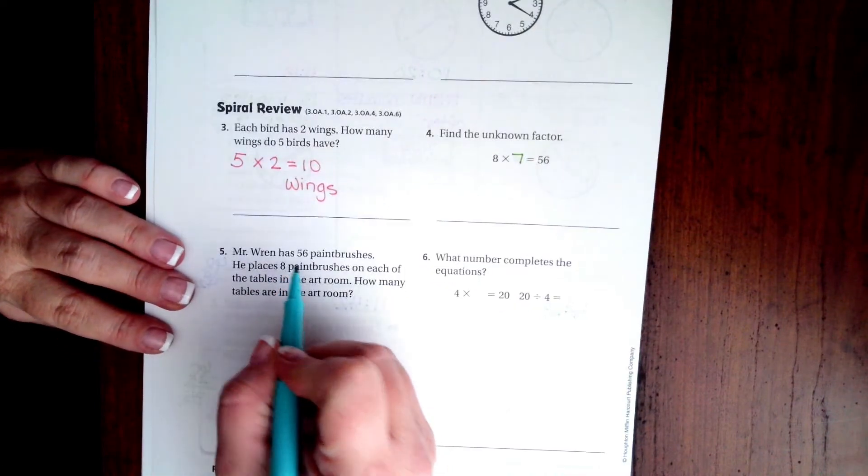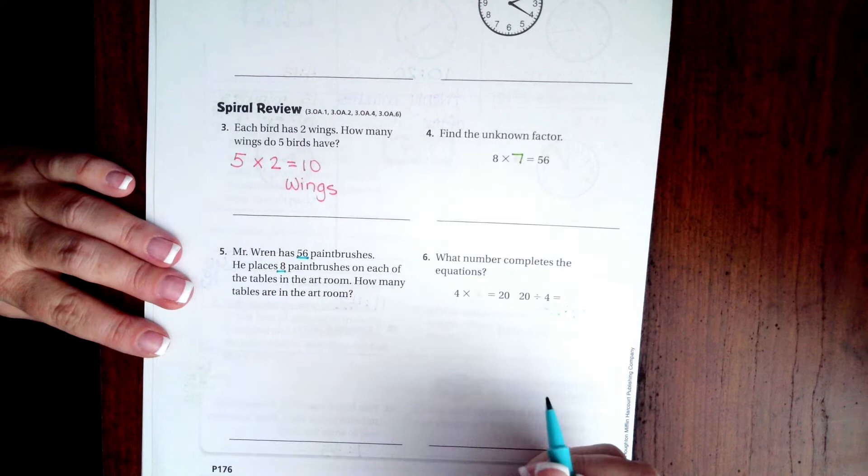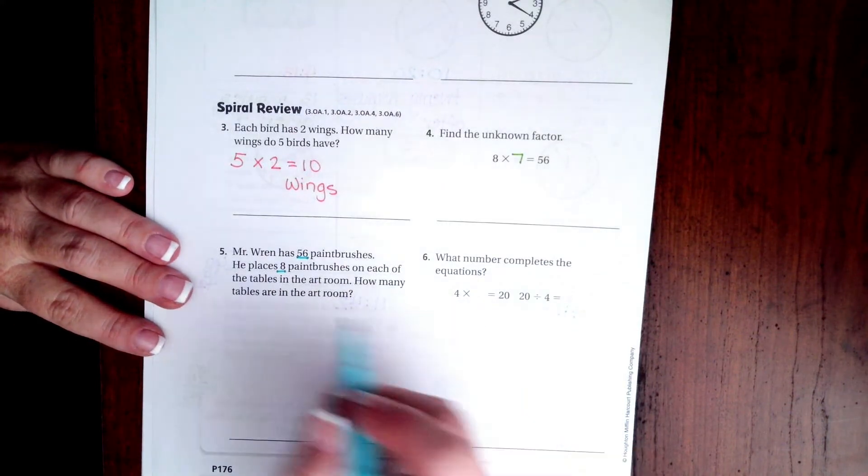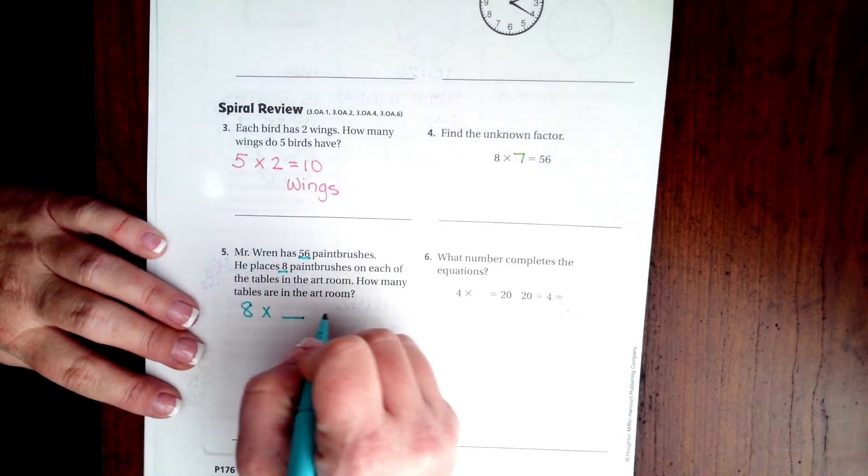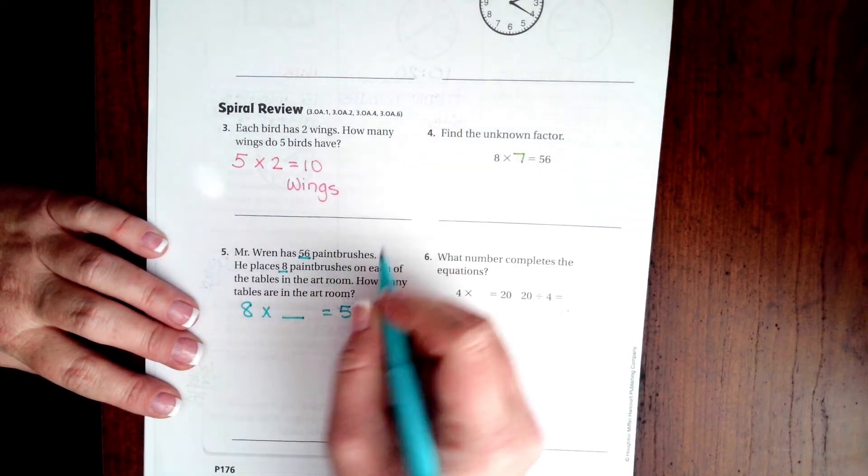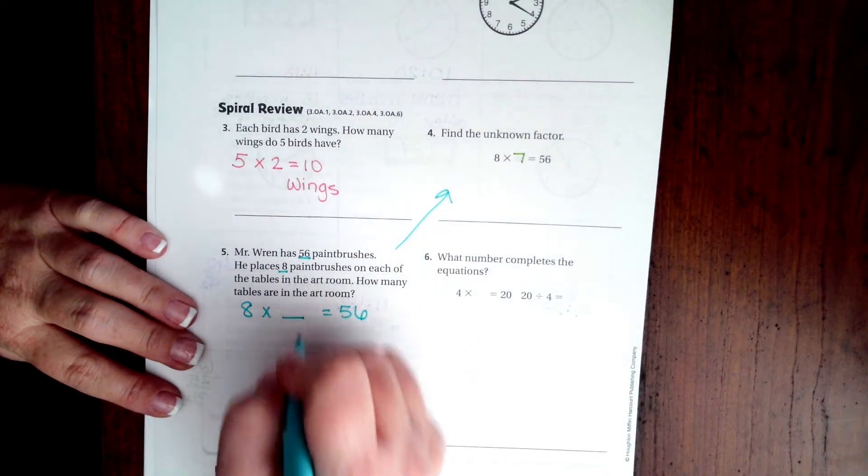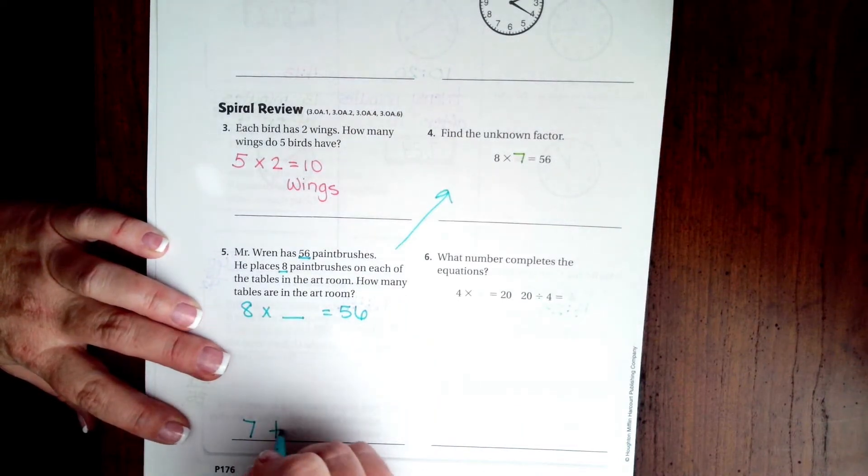Mr. Wren has 56 paintbrushes. He places 8 paintbrushes on each of the tables in the art room. How many tables are there? Basically, we have 8 times blank equals 56. If we look right there, 8 times 7 is 56, so how many tables are in the art room? 7 tables.